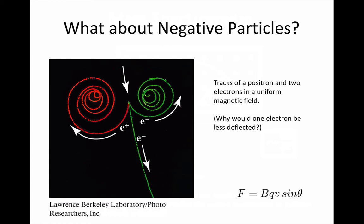You can see here the track of one positron and two electrons in a uniform magnetic field. You can see that the positron got exactly the opposite force to the electron, and so it curved in the opposite direction.